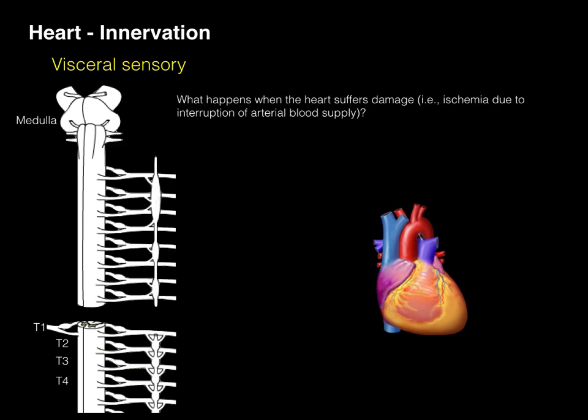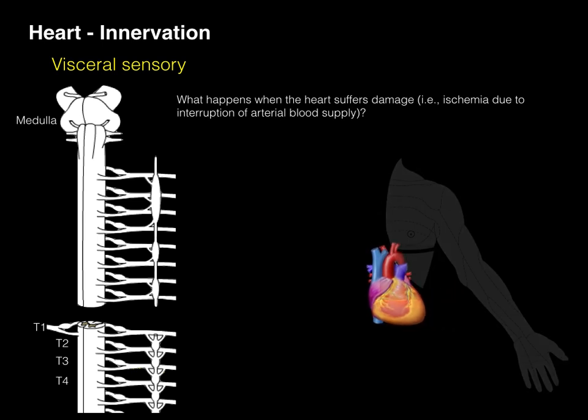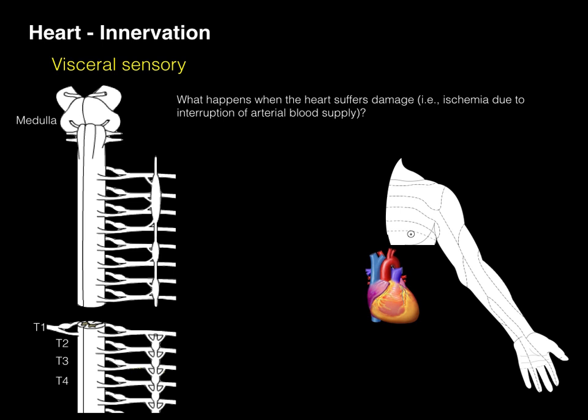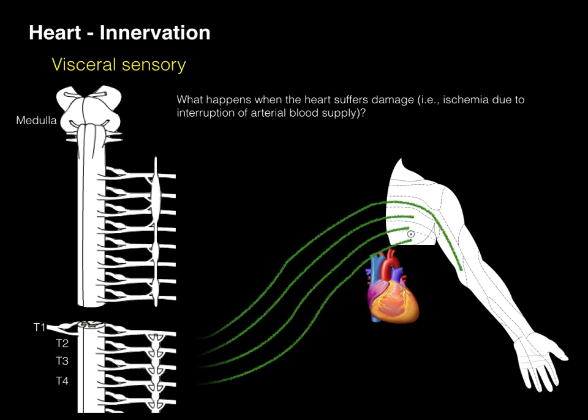When the heart suffers damage such as ischemia due to interruption of arterial blood supply, here's what occurs. We can place the heart alongside the dermatomes of the left upper limb. Somatic sensory innervation comes from the T1 to T4 dermatomes and travels through the dorsal root to the dorsal horn — things like pain, temperature, touch, vibration, and itchiness. That information hits the dorsal horn gray matter and then travels up to the brain, which is very familiar with this input since the skin is constantly stimulated.